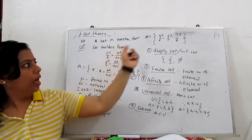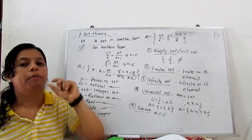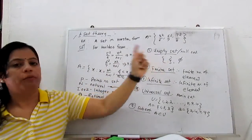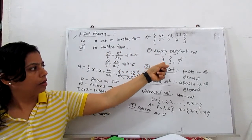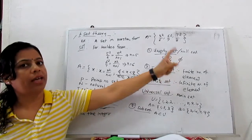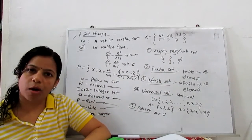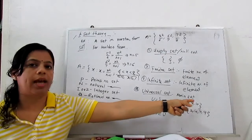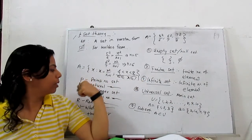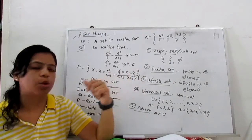Next, some kinds of sets. First is the empty set, or null set. What is an empty set? Empty set means zero elements — a set which contains no element is called an empty set, which we write as two brackets with no element between them, or with the phi symbol. Next is finite set: a set with a finite number of elements, for example {1, 2, 3, 4, ..., 10}. Infinite set has an infinite number of elements — for example, the set of all integers from minus infinity to plus infinity. This is called an infinite set.